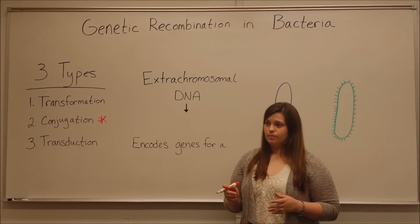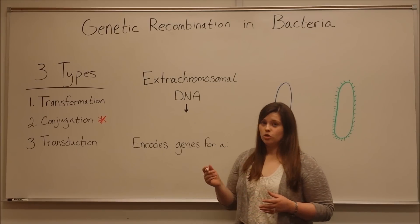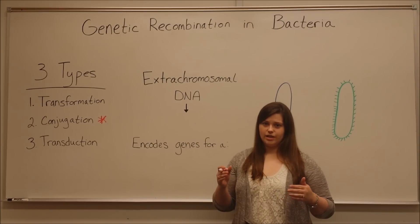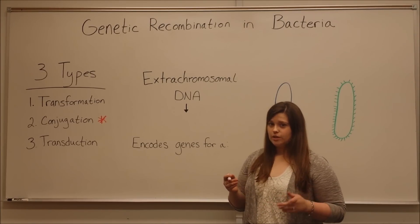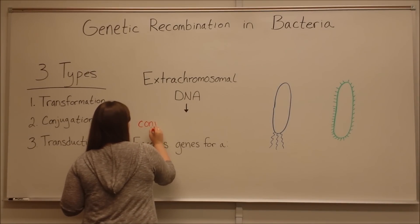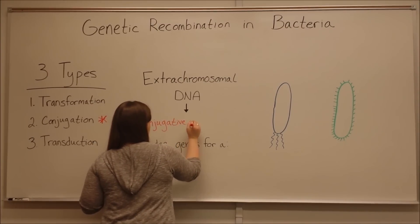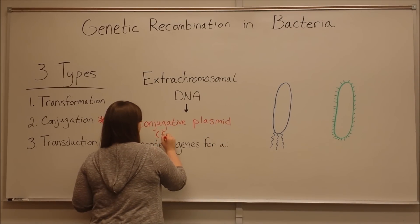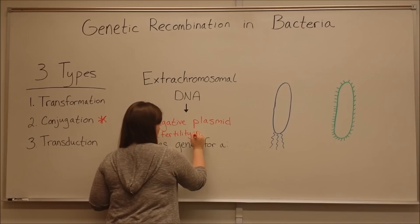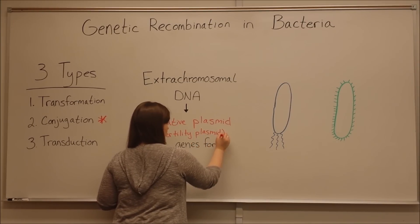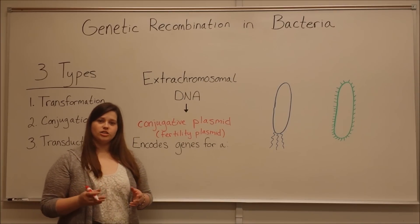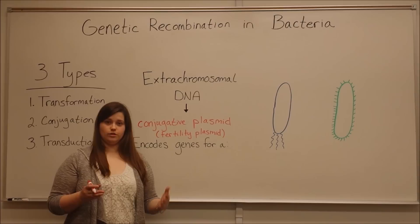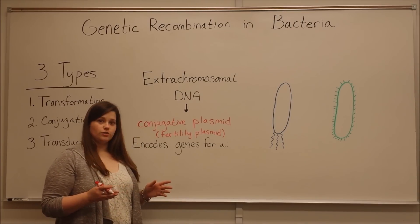Conjugation is made possible by a plasmid that is extra-chromosomal DNA, meaning circular DNA separate from the bacteria's chromosomal DNA. This plasmid is called a conjugative or fertility plasmid. This plasmid makes conjugation possible because, in addition to other genes like antibiotic resistance or virulence factors, it also encodes genes for a sex pilus.